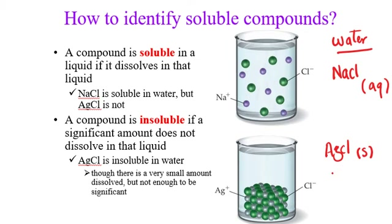Let me talk about solubility from another point of view. If you add a compound to water and it dissolves completely, it's going to disappear — we call that soluble. If you still see the compound, it's still visible, we call that insoluble. So soluble compounds use (aq), insoluble use (s) for solid. Please make sure — don't be confused. S represents solid. It doesn't represent soluble. Soluble means (aq).